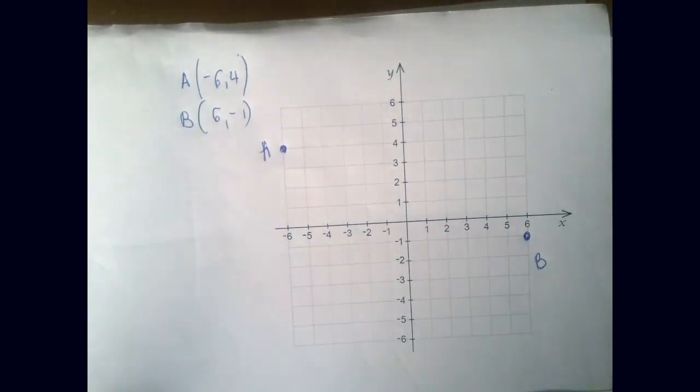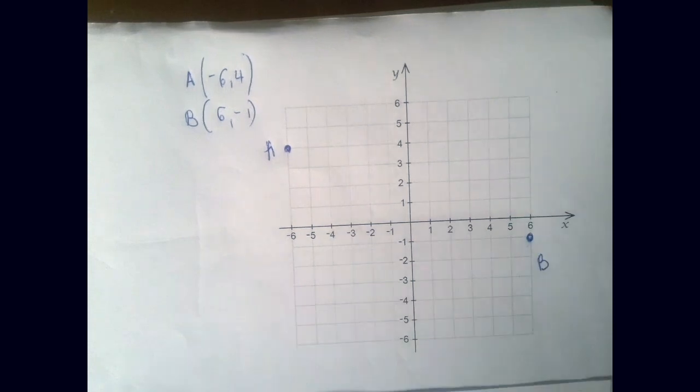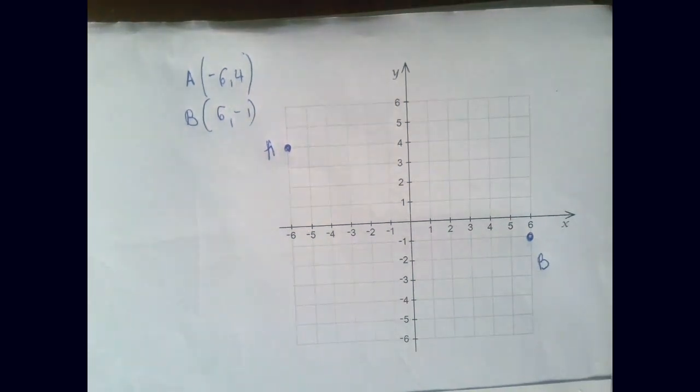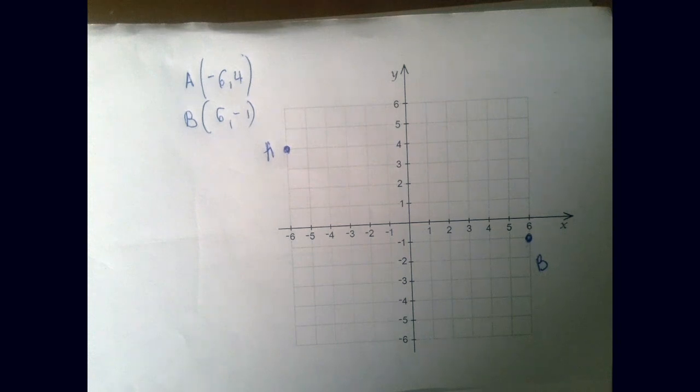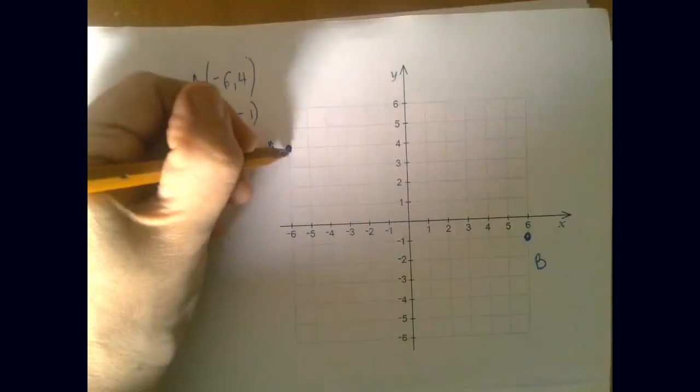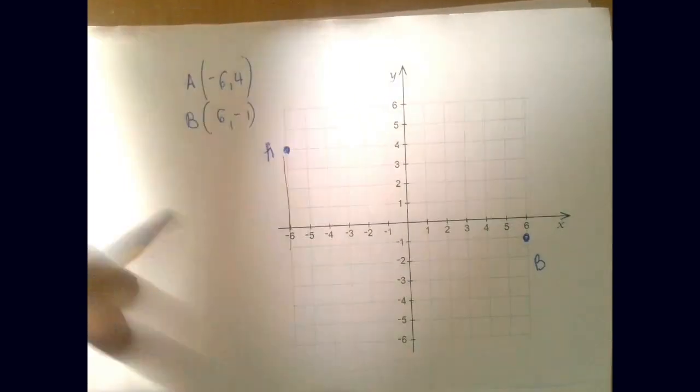As the name rectangular coordinate system suggests, there are lots and lots of rectangles in the rectangular coordinate system, and where there are rectangles, there are right angles. One way to find the distance between these two points is to apply the Pythagorean theorem to a right triangle with horizontal and vertical sides, like so.